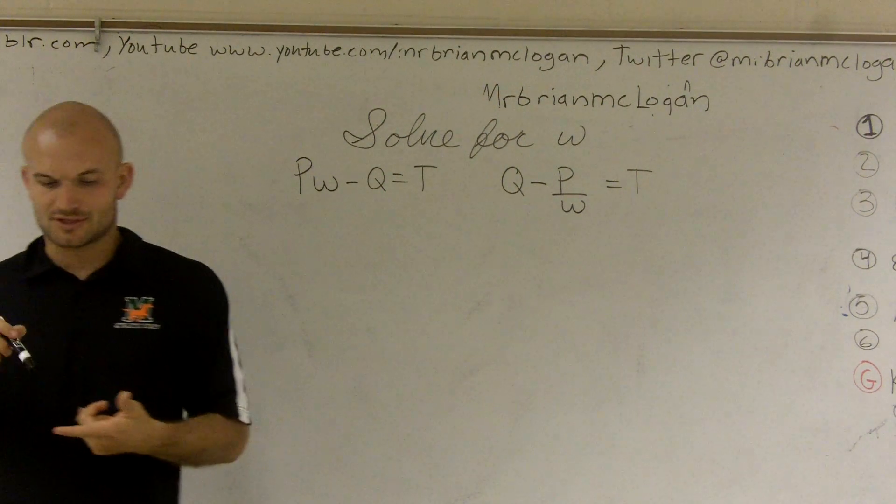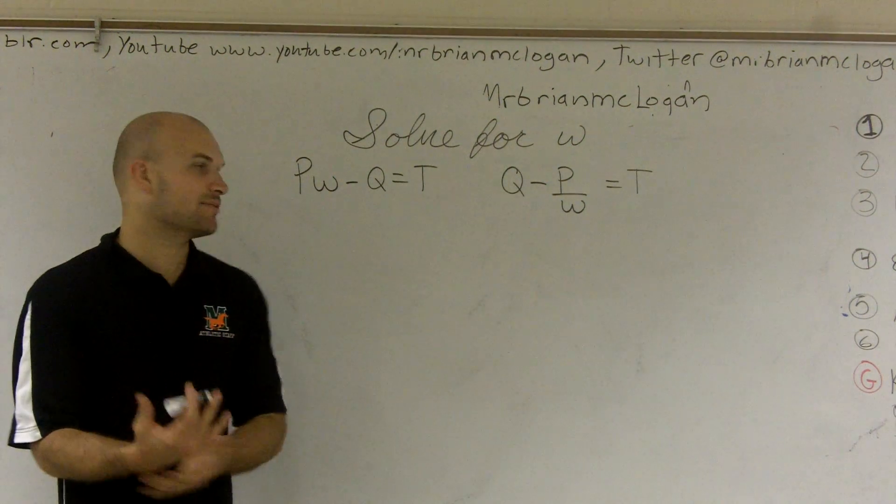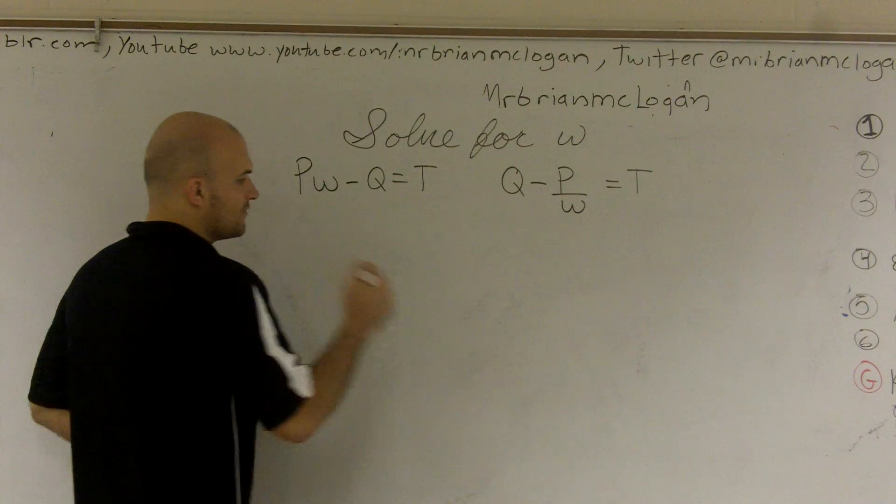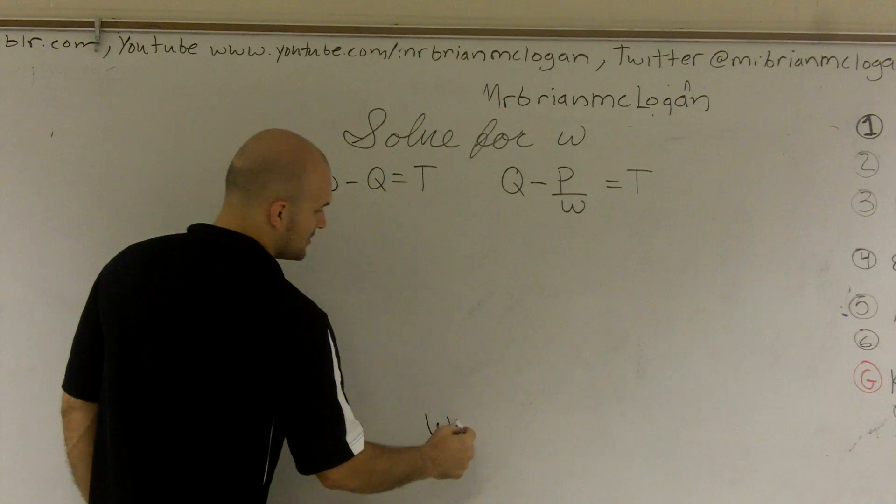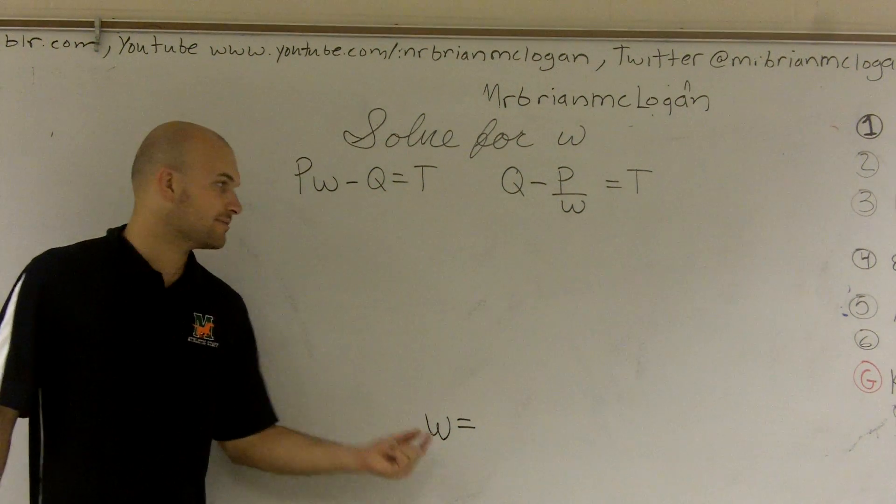So what we need to think about is try not to think about what value we're going to get for w, but try to think of what is happening to w that's prevented from being by itself. Remember, when I say solve, I want to get my answer to be w equals, meaning I want w by itself. I want nothing else beyond the side of w.